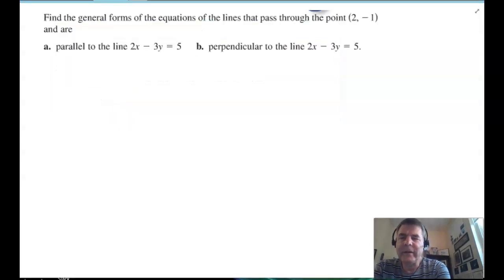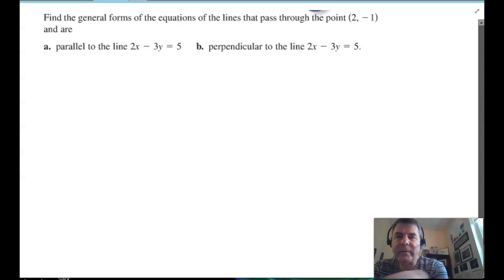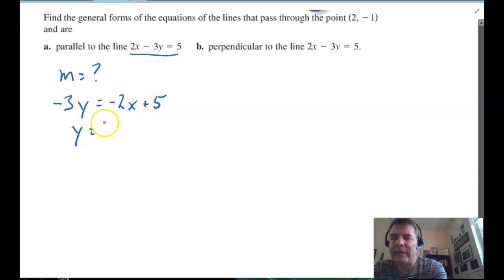So, let's find the general forms of the equations of the lines that pass through the point 2, negative 1 and are parallel to the line 2x minus 3y equals 5 and perpendicular to that same line 2x minus 3y equals 5. Well, to start off, let's get the slope of this line 2x minus 3y equals 5. And how are we going to do that? Well, let's put it in slope-intercept form. So, I'm going to subtract 2x from both sides. And I'm going to divide by negative 3. That will give me a positive 2 3rds x minus 5 3rds. There's our slope.